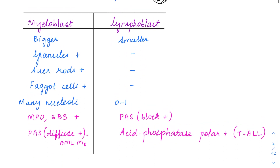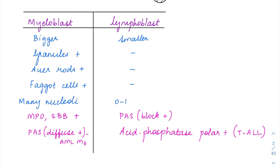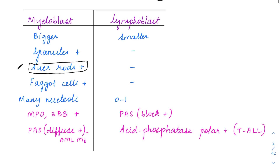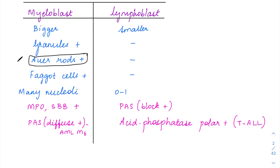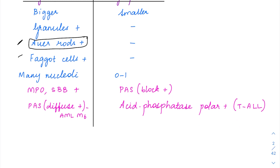Looking at the difference between myeloblast and lymphoblast: myeloblasts are larger in size and can have the presence of granules. In lymphoblasts, granules are not present. In myeloblasts, the characteristic finding is the presence of an Auer rod — if Auer rods are present, you can label it as myeloblast directly. When there is a collection of Auer rods in the cell, it is given a special name called a faggot cell, characteristically seen in APML.